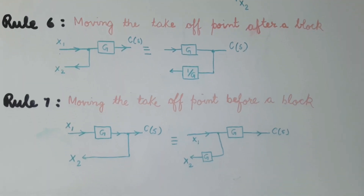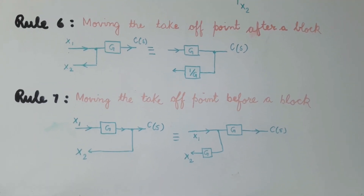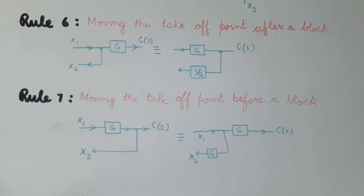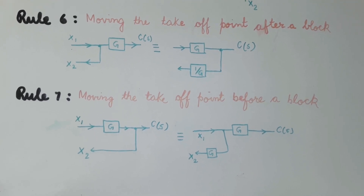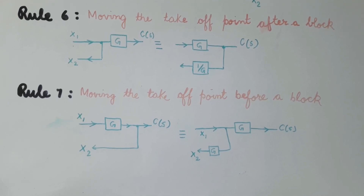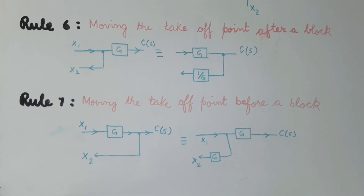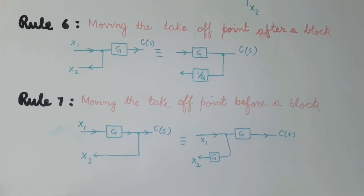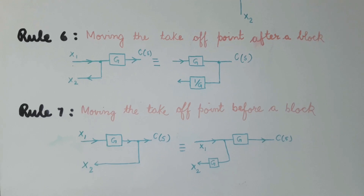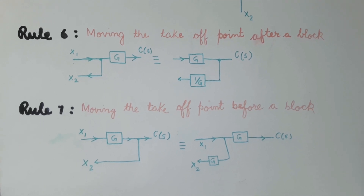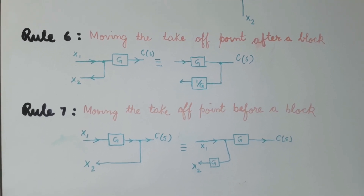Similarly, in rule number 7, if we are moving the takeoff point before the block, in that case we will add a block G with X2. I hope all the rules are clear and you will be able to solve any problem with the help of block diagram reduction techniques.